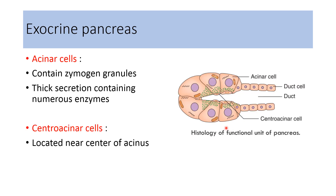Here in this figure, we can see histology of the functional unit of the pancreas, which shows presence of acinar cells and centroacinar cells. The acinar cells contain zymogen granules; they synthesize and secrete enzymes inside the lumen, and also secrete various electrolytes like bicarbonate inside the lumen. From this secretion, it travels through the duct and is modified by the activity of the ductal cells.